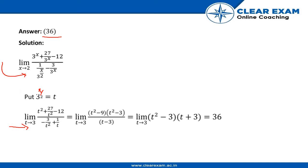Because if we take 3 to the power x by 2, putting x is equal to 2 in this equation, we get t is equal to 3. So limit t tends to 3, t square plus 27 by t square.